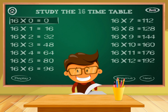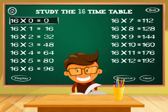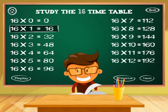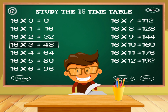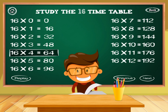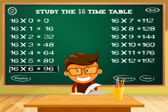Timetable of 16. 16 times 0 equals 0. 16 times 1 equals 16. 16 times 2 equals 32. 16 times 3 equals 48. 16 times 4 equals 64. 16 times 5 equals 80. 16 times 6 equals 96.